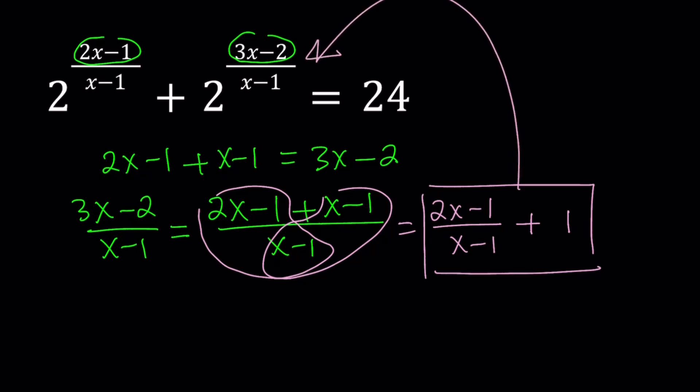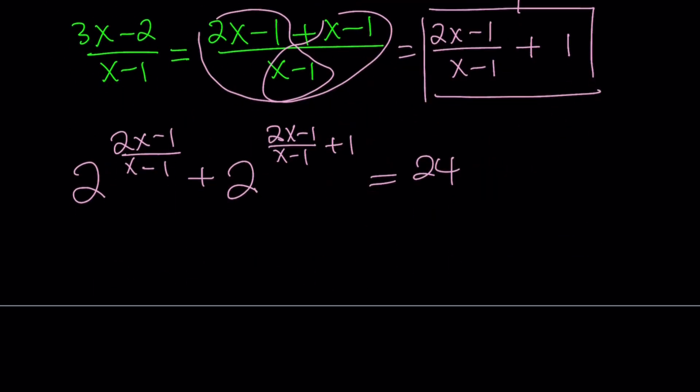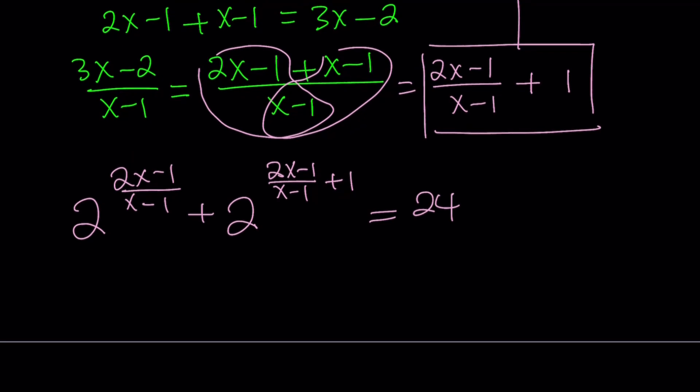Let's go ahead and replace the second fraction, which is the exponent. That's going to give us 2 to the power of 2x minus 1 over x minus 1 plus 2 to the power of 2x minus 1 over x minus 1 plus 1, and the sum equals 24. So we broke it down and wrote it that way.